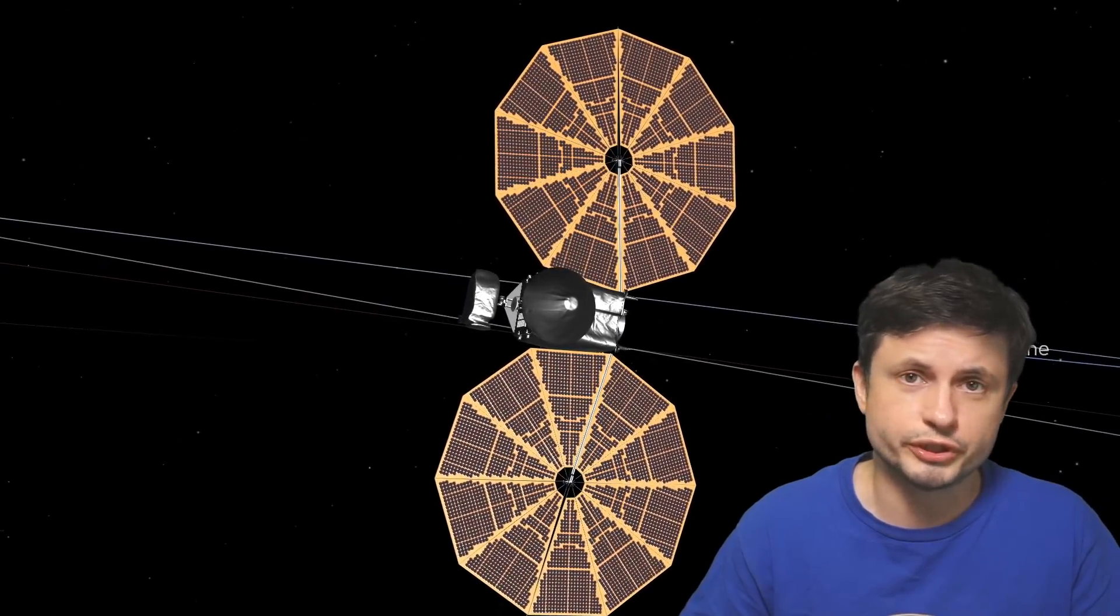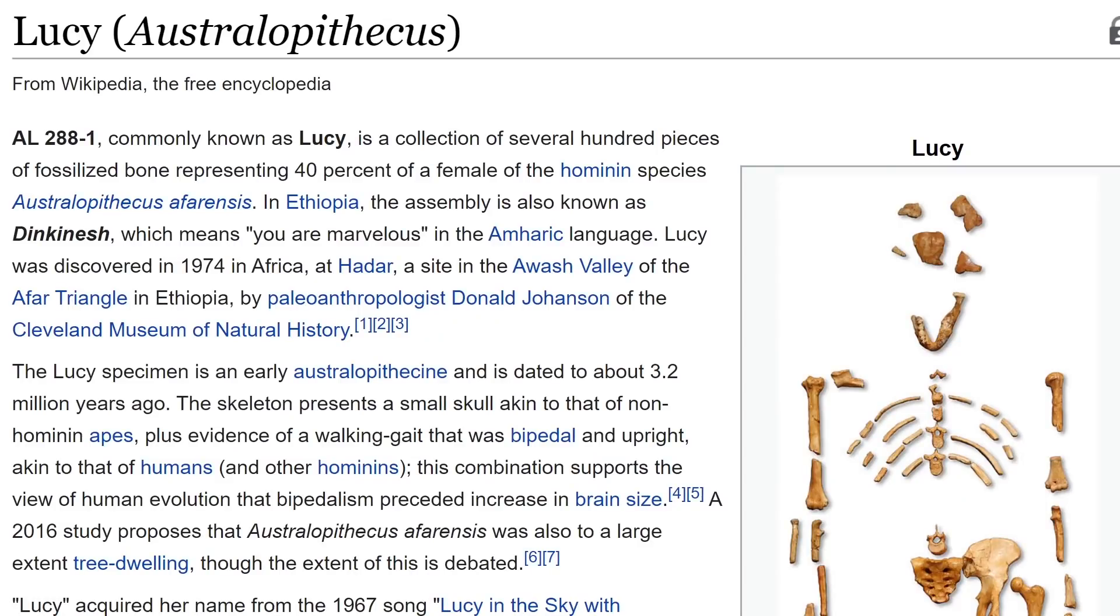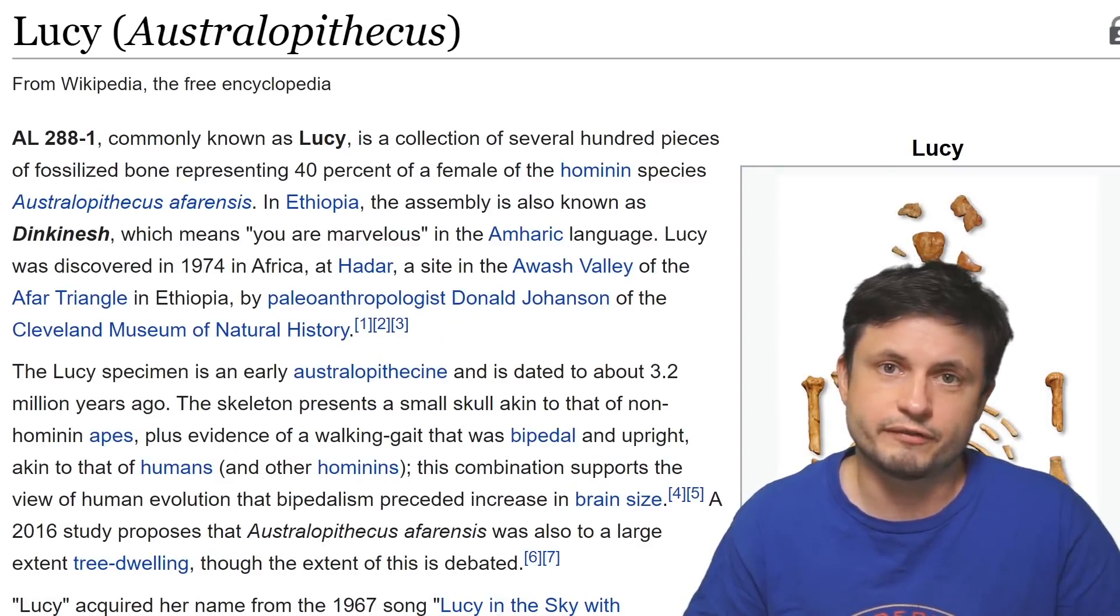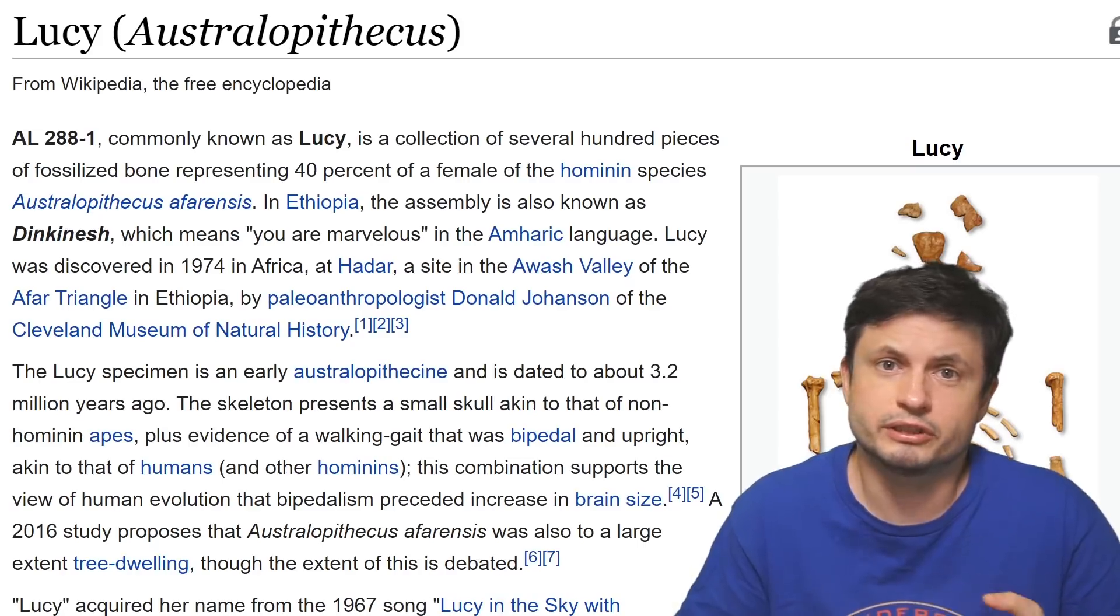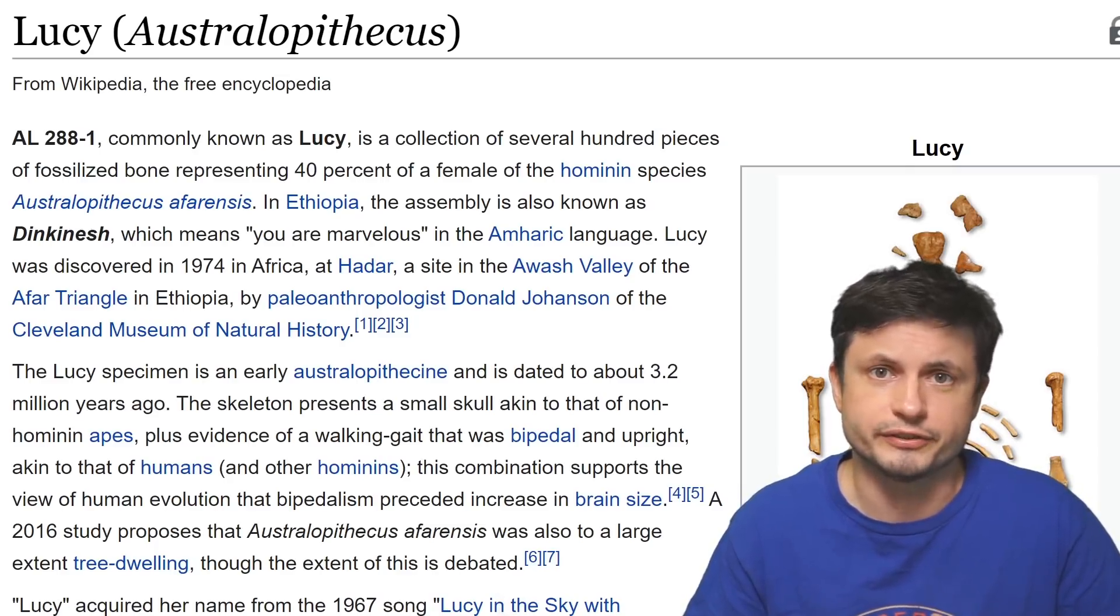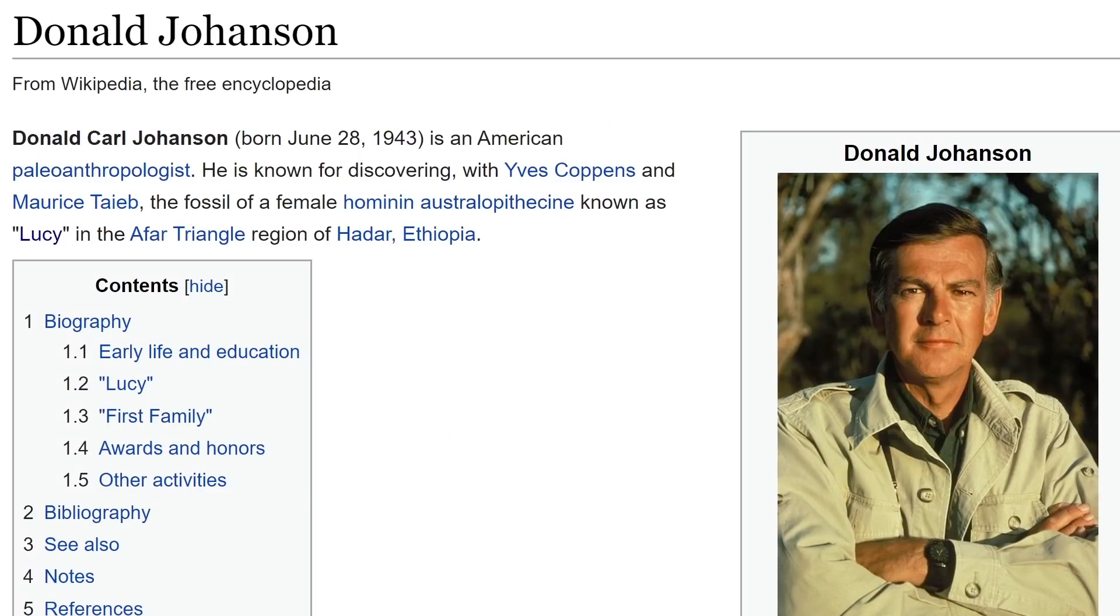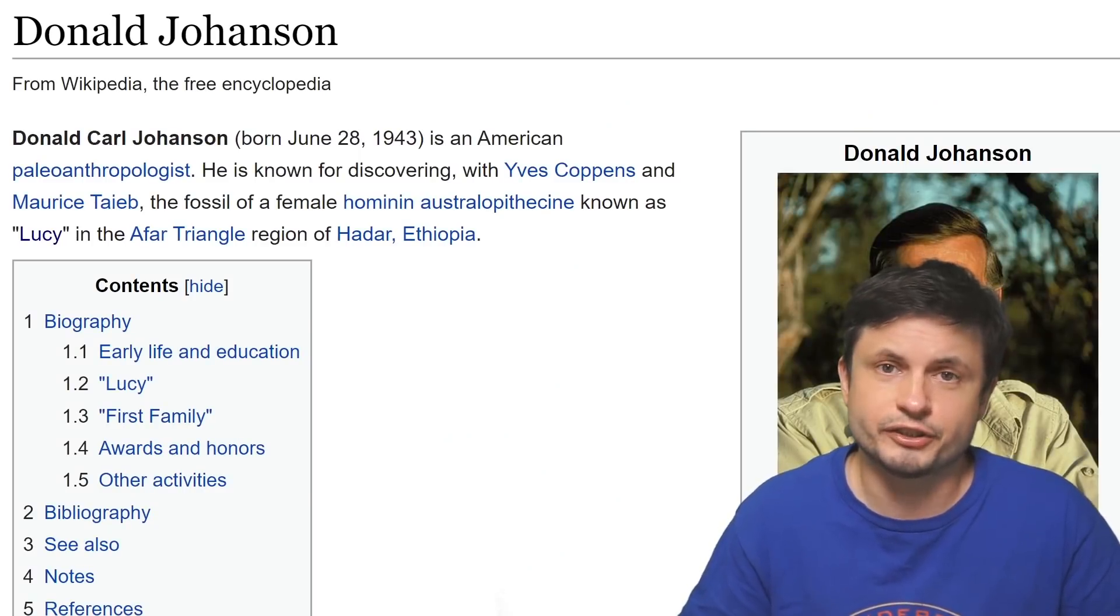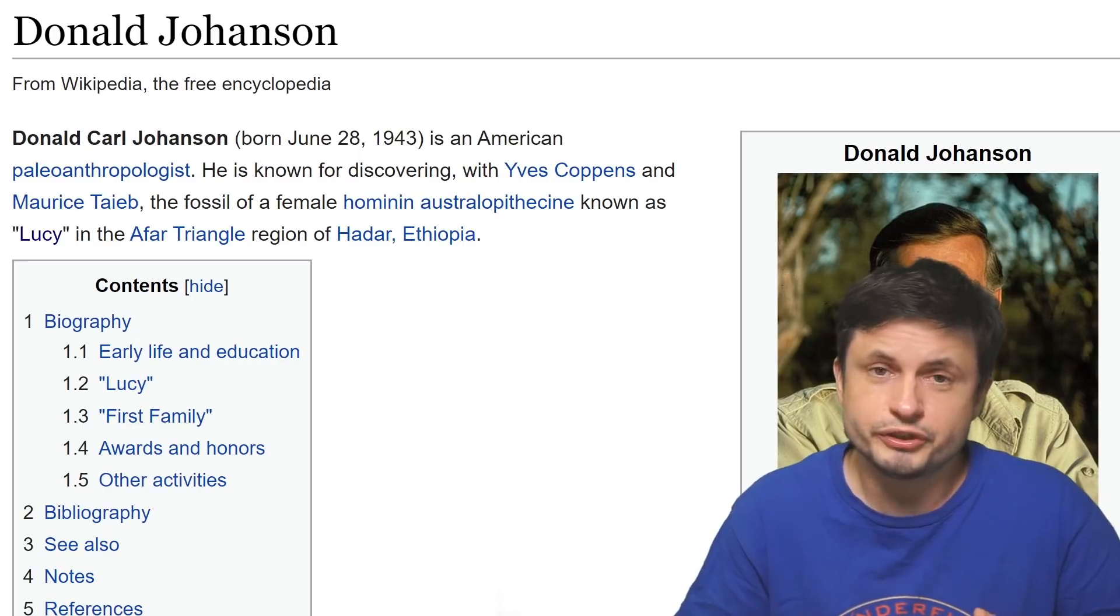So this right here is Lucy. And in case you're wondering, this comes from Lucy the Australopithecus, the original fossil discovered several decades ago that helped us understand the origin of humans and hominids and how humans evolved from our early ancestors. The anthropologist responsible for studying this is Donald Johansson and he actually has an asteroid named after him and Lucy mission is going to be visiting this asteroid as well.